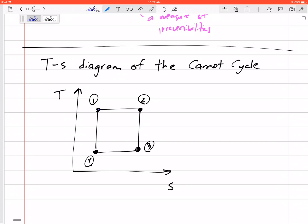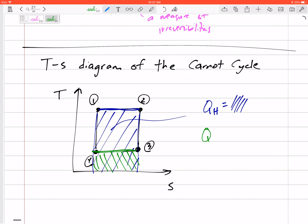So from one to two, the Q would be this whole rectangle. QH would be this blue. The QL would be from three to four. That would be this green. QL is this green.